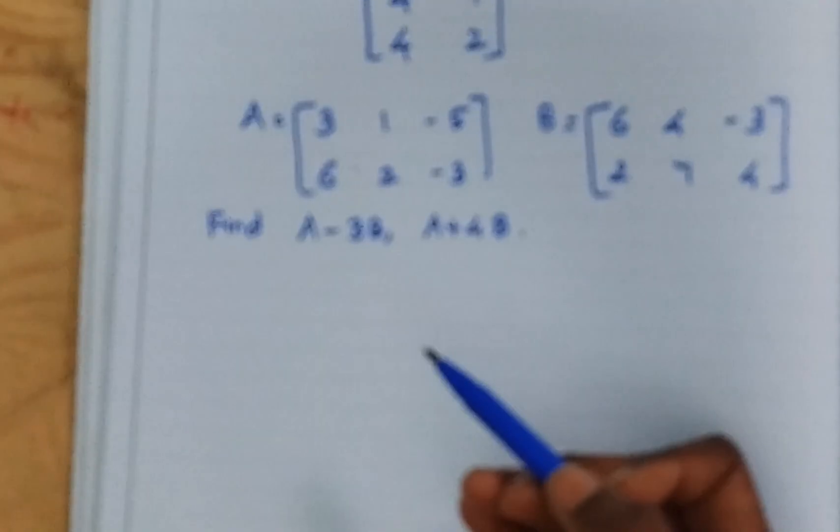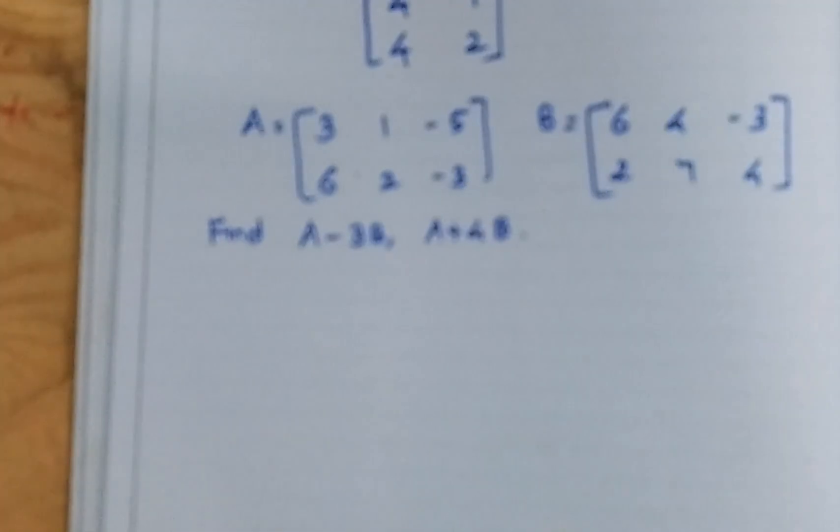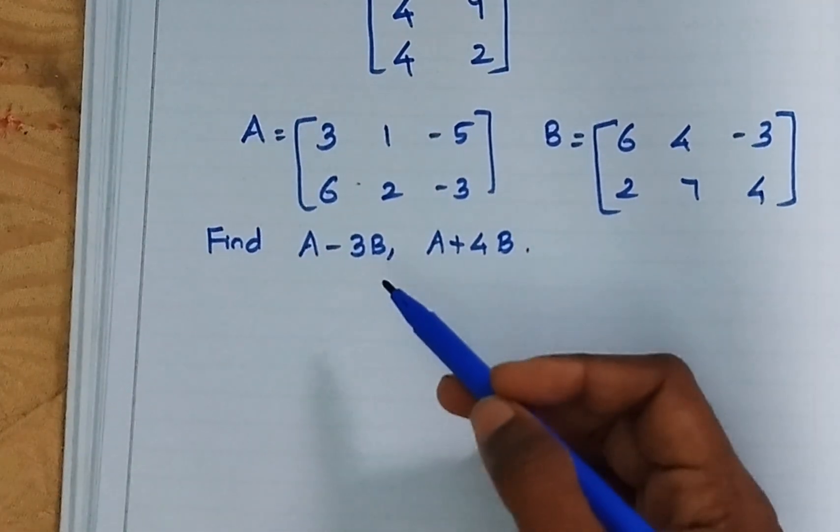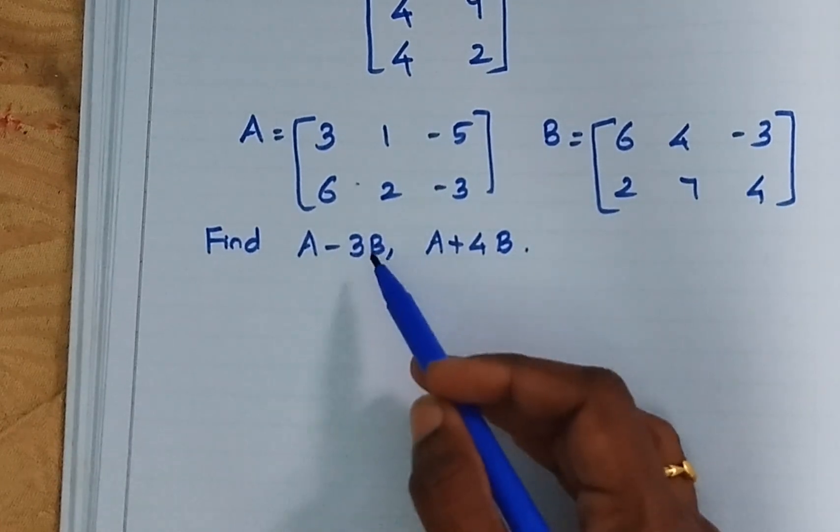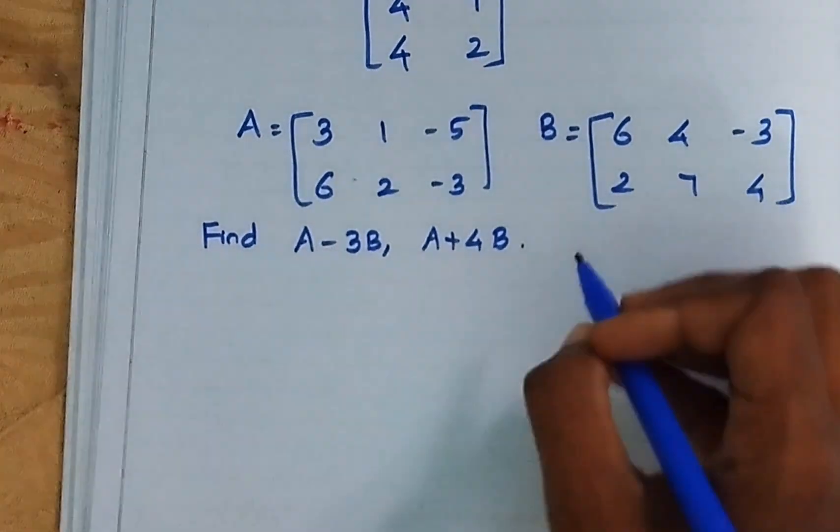So in this case how to do? A is already known. You have to find 3B. 3B means the B should be multiplied completely by 3. So first let's find 3B.